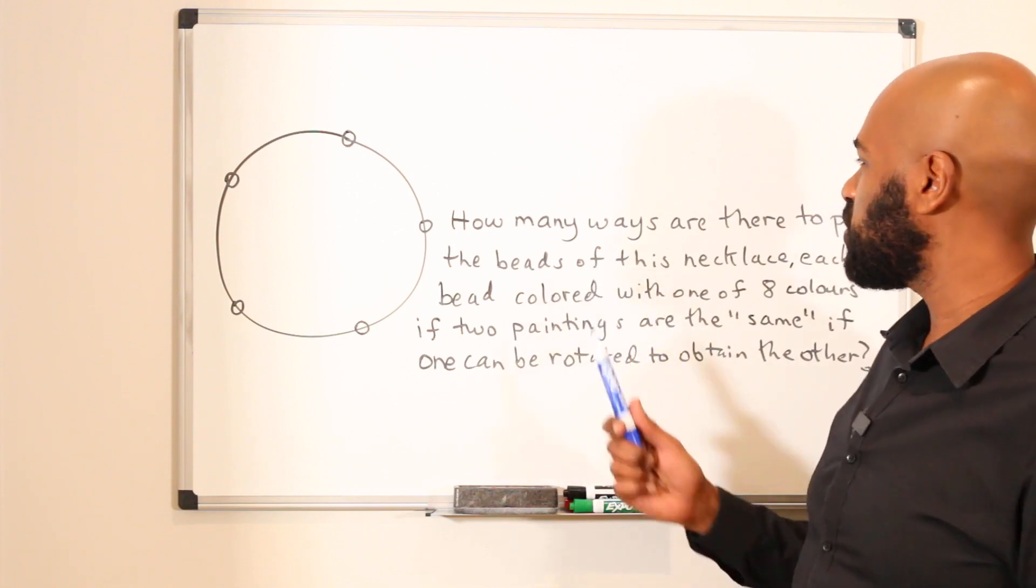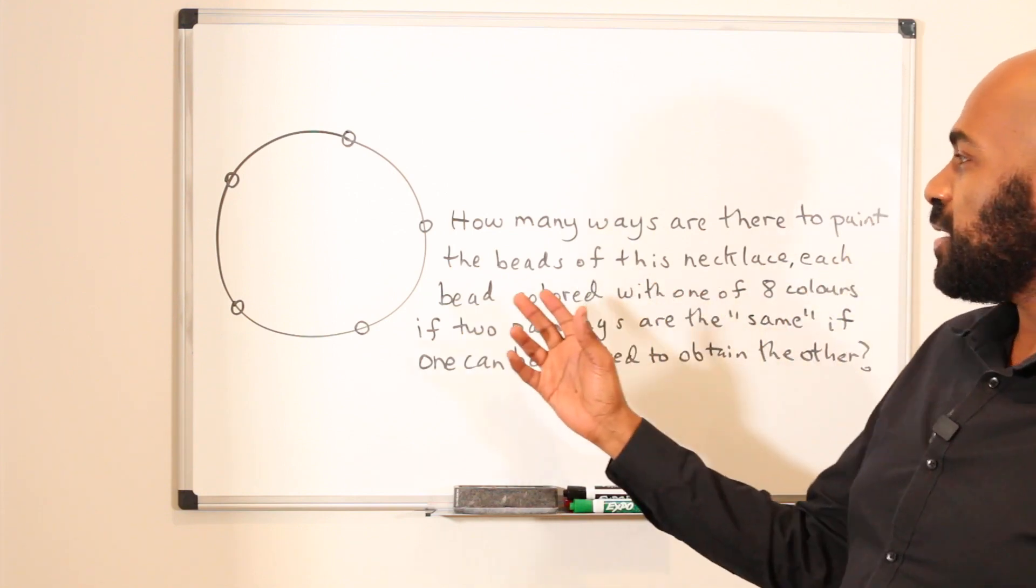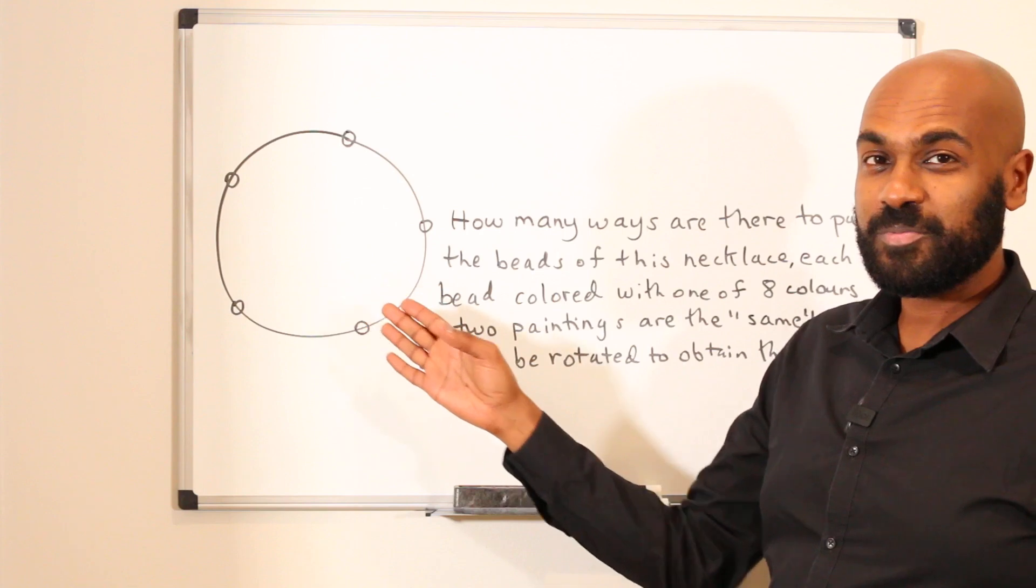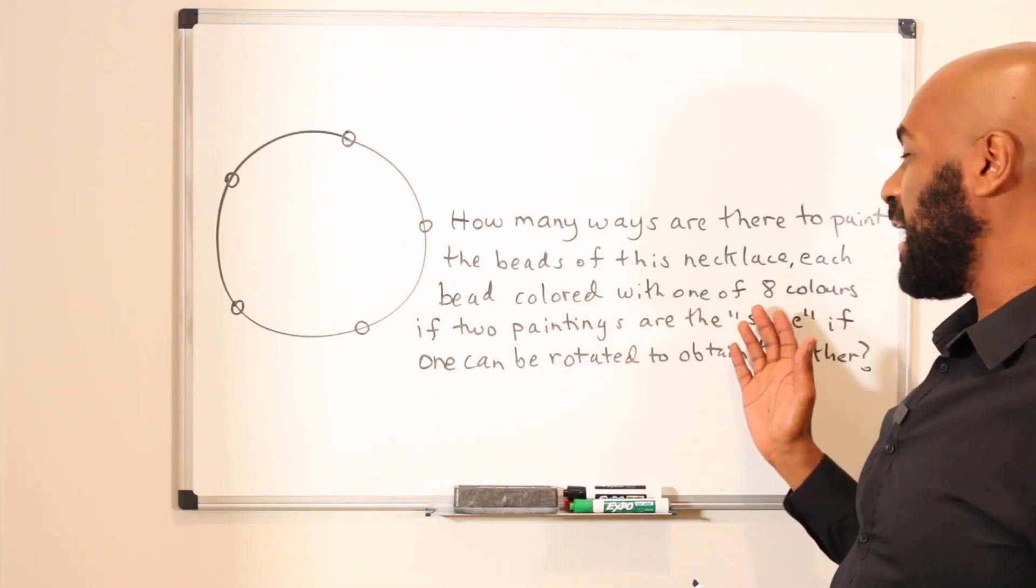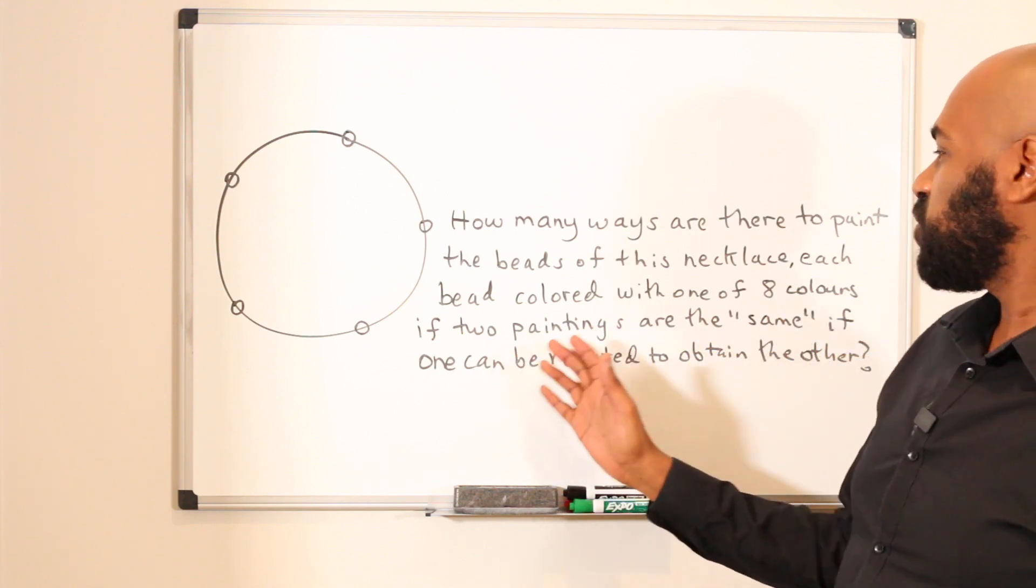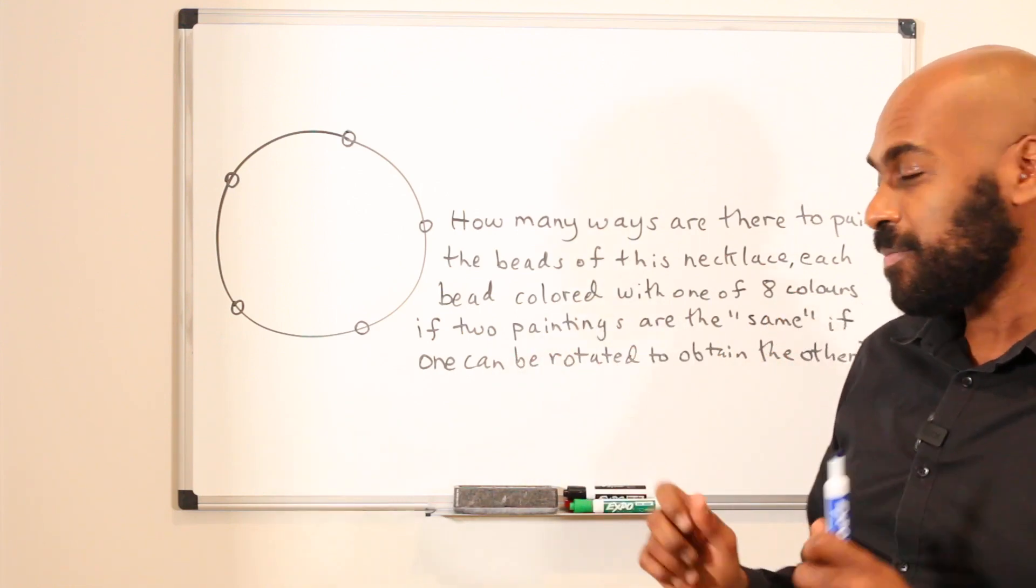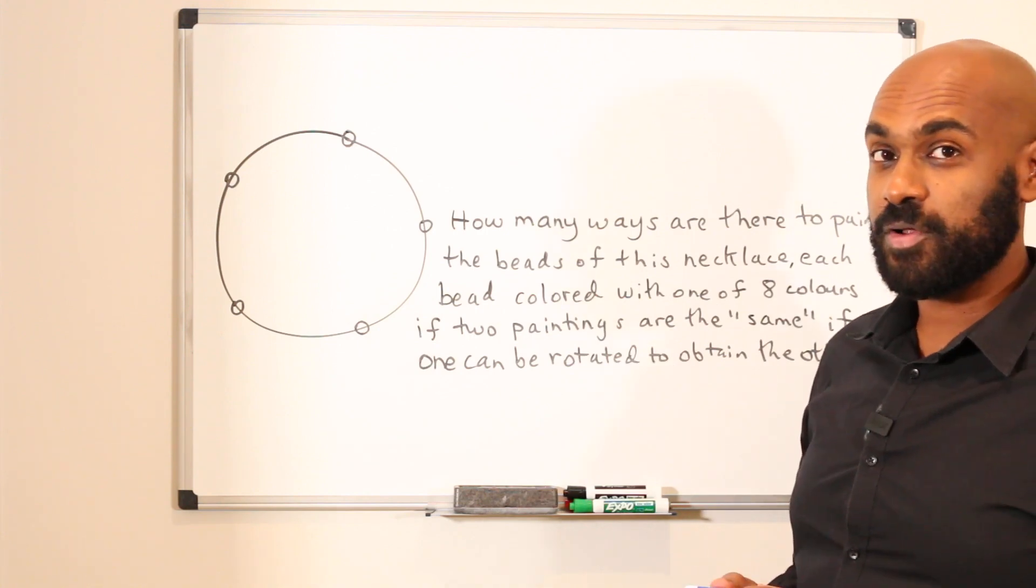The problem is how many ways are there to paint the beads of this necklace here, probably the ugliest necklace you've ever seen, each bead colored with one of eight colors, if two paintings are considered the same if one can be rotated to obtain the other.